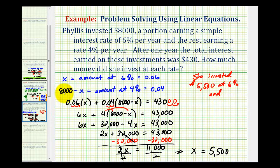And then 8,000 minus 5,500 would be $2,500 at 4%.